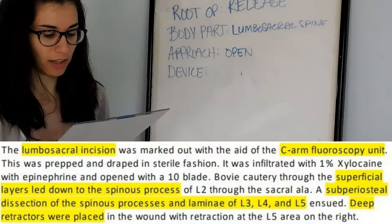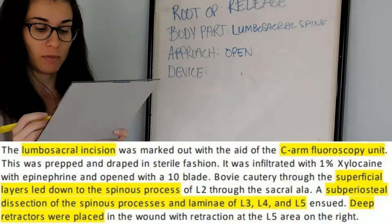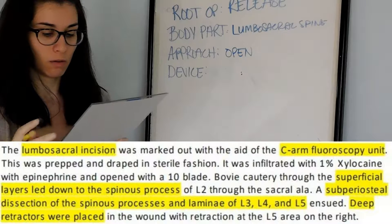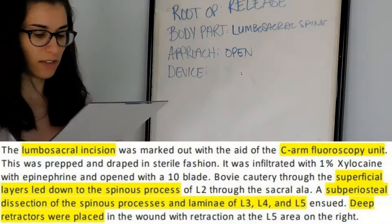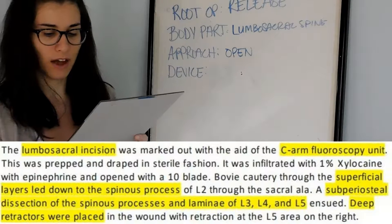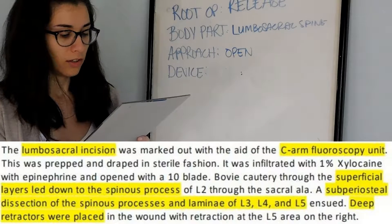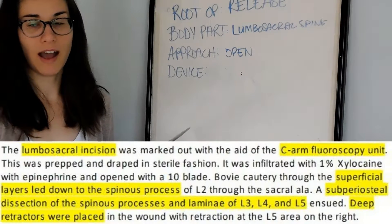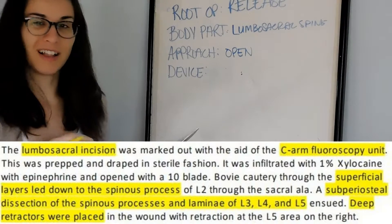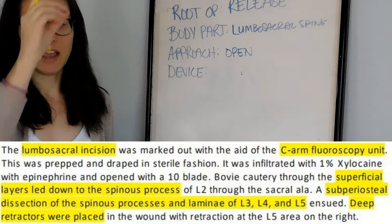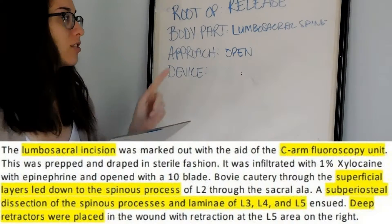The cautery was taken through the superficial layers down to the spinous process of L2 through the sacral ala. A subperiosteal dissection of the spinous processes and laminae of L3, L4, and L5 ensued. They are down to the body part they'll be operating on, haven't used a scope, and no mention of a puncture — I'm confirming open. They had a large enough incision to see all body parts down to the operative site.